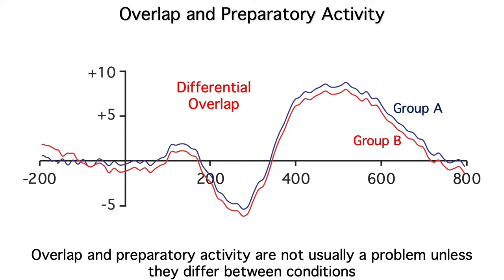you should look closely at the baseline to see if the tilt is different for the waveforms being compared. Because of baseline correction, differences in tilt will often result in differences between conditions starting around time zero. So if you see an effect that begins unrealistically early and persists for a long time, you should suspect differences in overlap or preparatory activity.